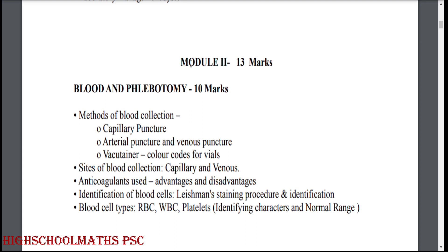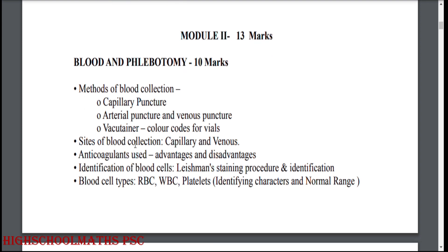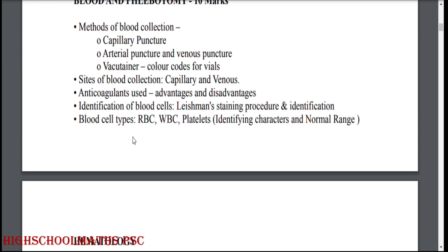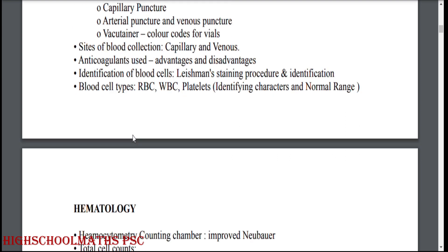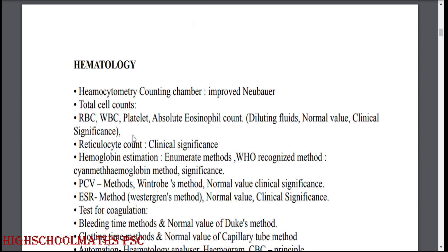Module 2: Blood and phlebotomy. Methods of blood collection, sites of blood collection — capillary and venous. Anticoagulants used. Identification of blood cells, blood cell types. Hematology: hemocytometric counting chamber. Total cell counts — RBC, WBC, platelet.